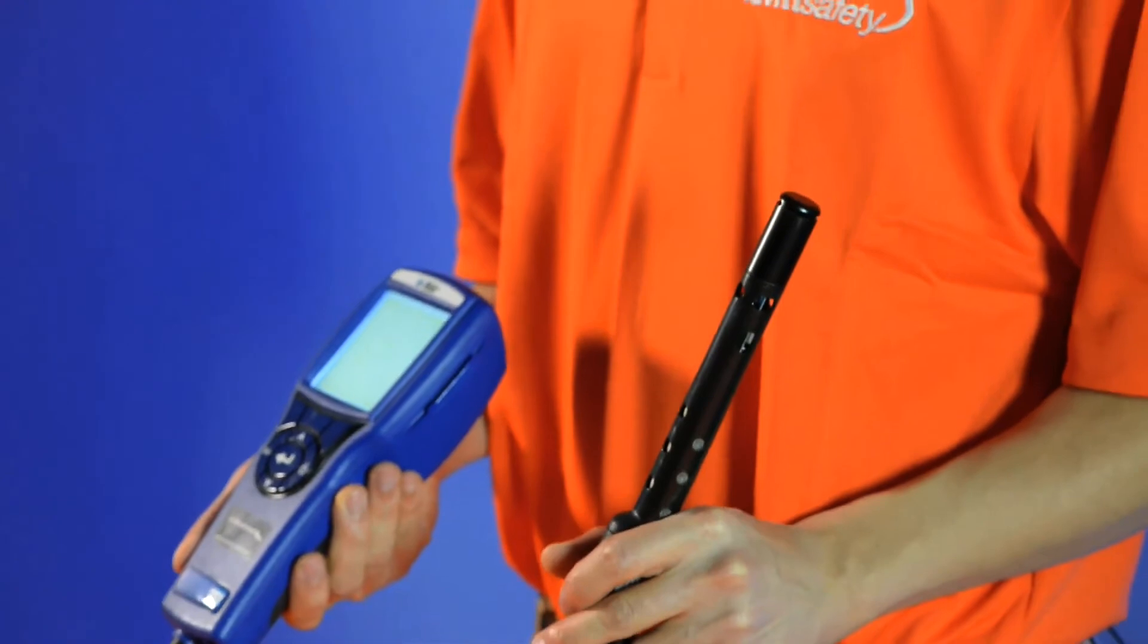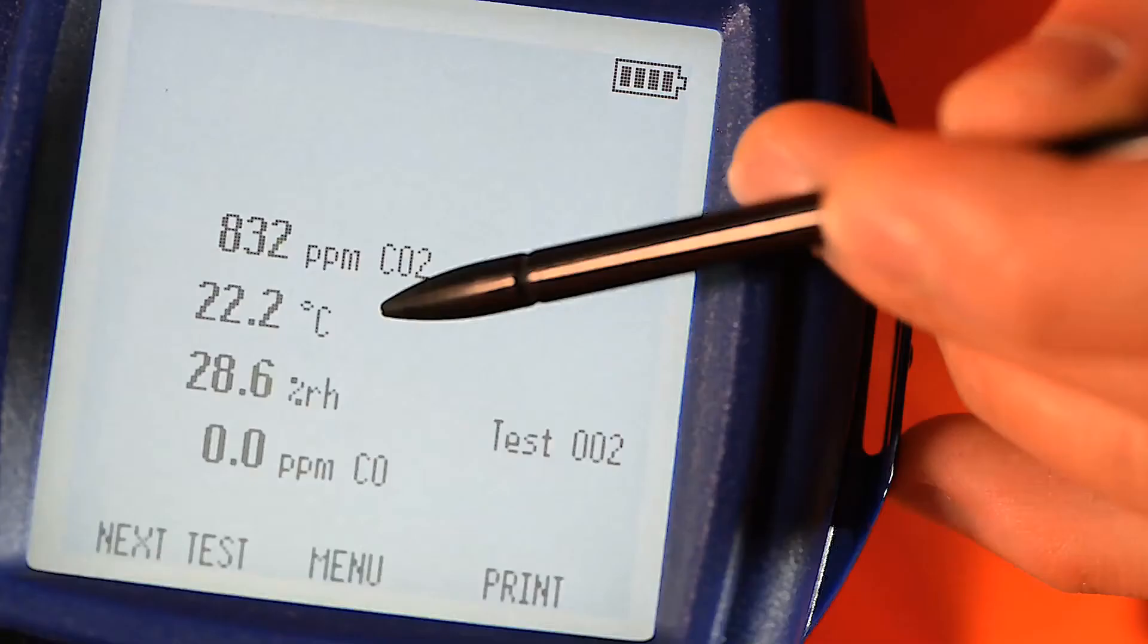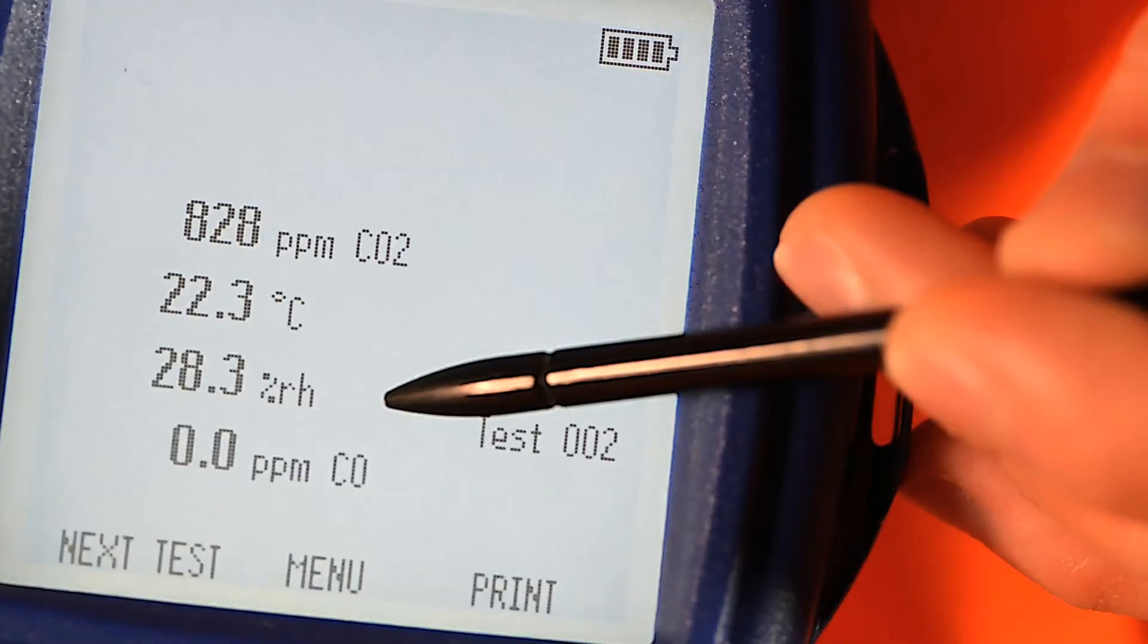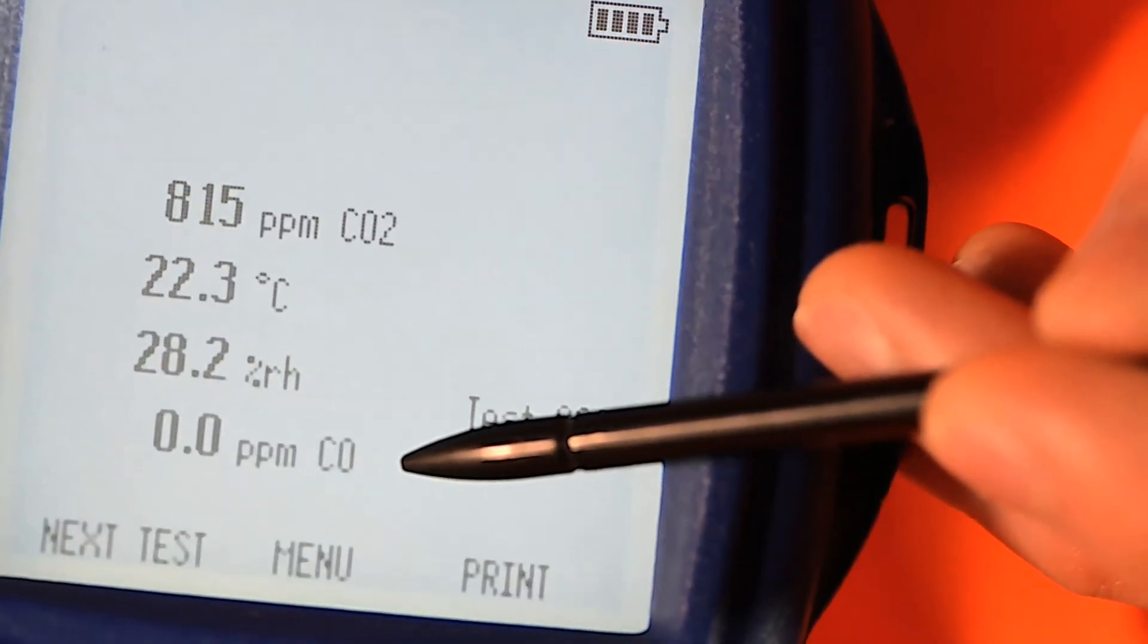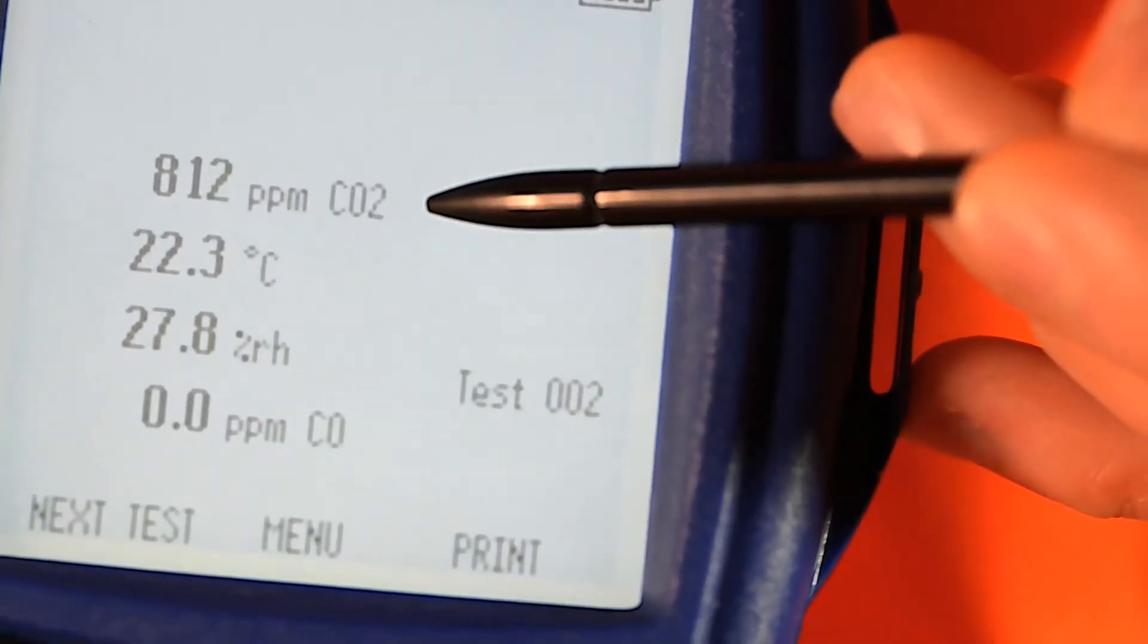Once on, the Q-Track screen should indicate the current readings for temperature, relative humidity, carbon monoxide, and carbon dioxide, as well as the battery level.